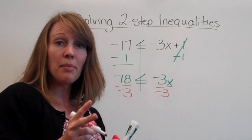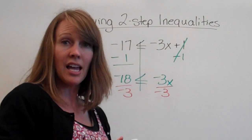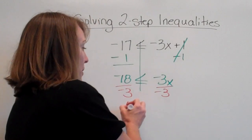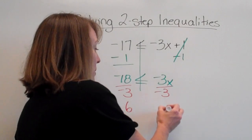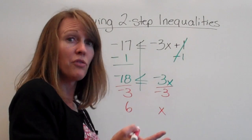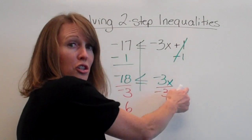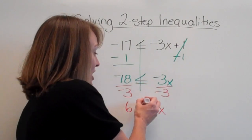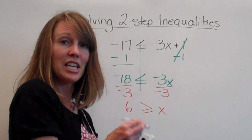Alright, now, when we divide by a negative, it changes the signs of everything. So this becomes a positive 6. This becomes a positive x. And since we've changed all the signs, we need to change the signs here as well.